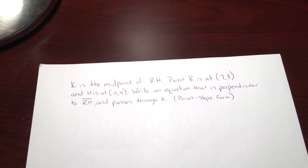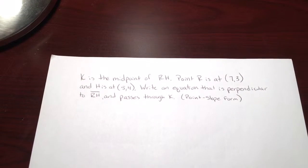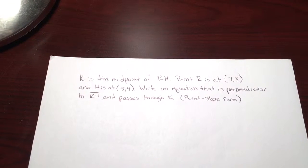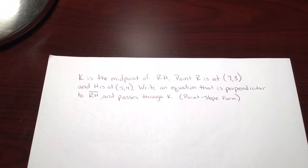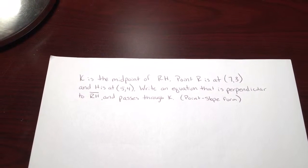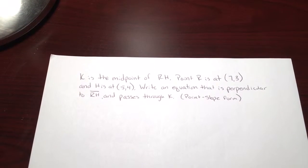Here is a problem where we're talking about a line passing through a midpoint and is also perpendicular. We've got K as the midpoint of line RH. Point R is at (7,3) and H is at (5,4). Write an equation that's perpendicular to line RH and passes through point K.